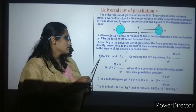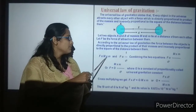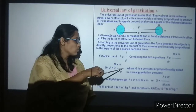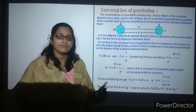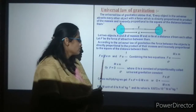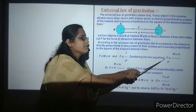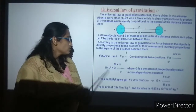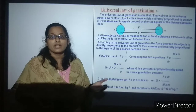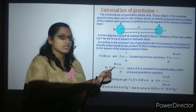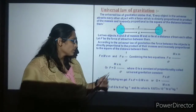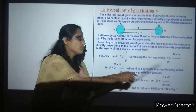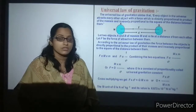So how is it written? F is directly proportional to M into m, and F is inversely proportional to one by D squared. Combining the two equations, F is directly proportional to M·m by D squared. So F is also related to gravity: F equals G times M times m divided by the square of the distance between them, where G is the proportionality constant known as the universal gravitational constant.